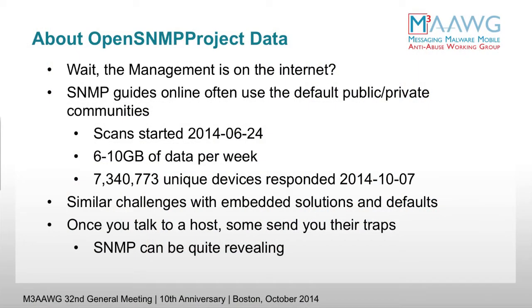The most common guides on the internet just give the example communities of 'public' and 'private.' We started scanning in June of this year, collecting about 6 to 10 gigs of data a week. There are over 7 million hosts that responded at the beginning of October. We have similar challenges with embedded solutions and small devices, from the service processors included in servers to a variety of different network equipment — and it can be very revealing, just like the NTP data.